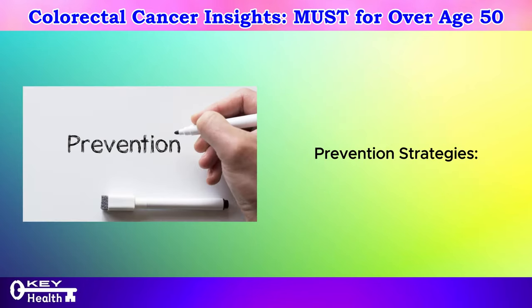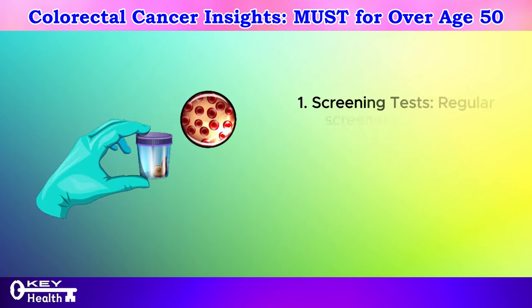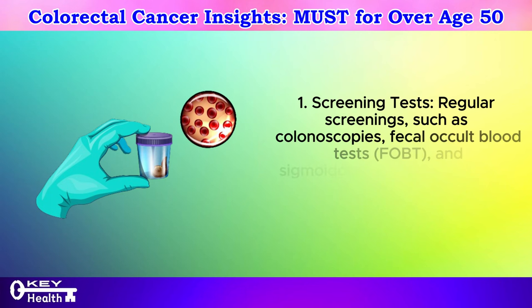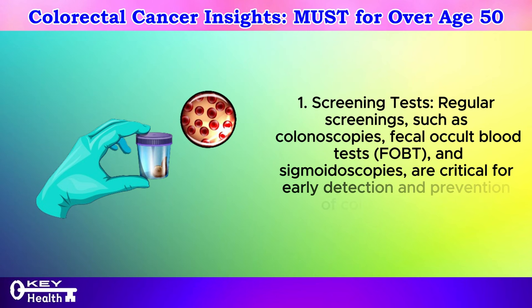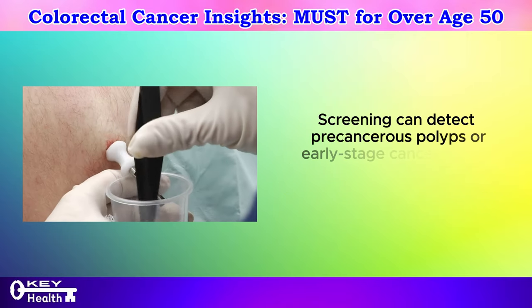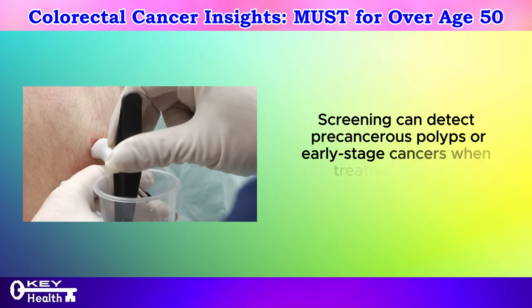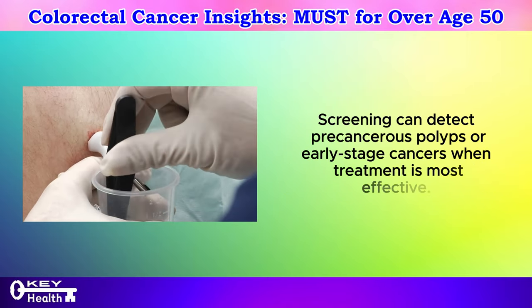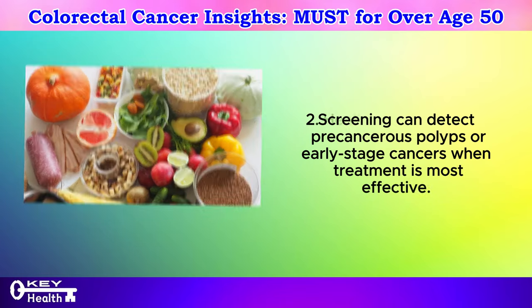Prevention strategy 1: Screening tests. Regular screenings — such as colonoscopies, fecal occult blood tests, and sigmoidoscopies — are critical for early detection and prevention of colorectal cancer. Screening can detect precancerous polyps or early-stage cancers when treatment is most effective.